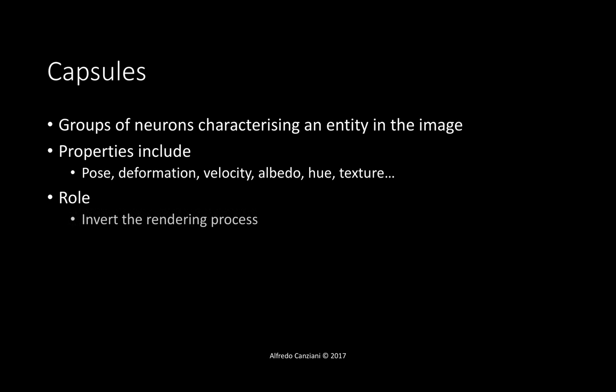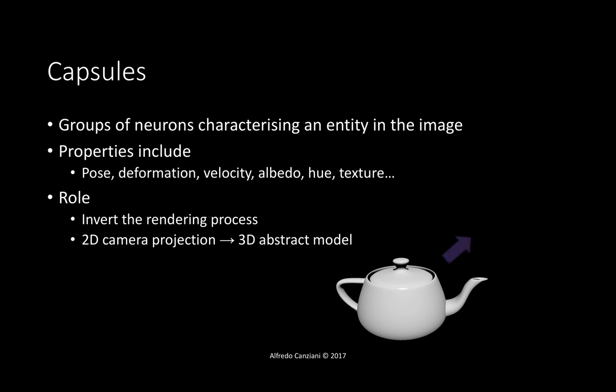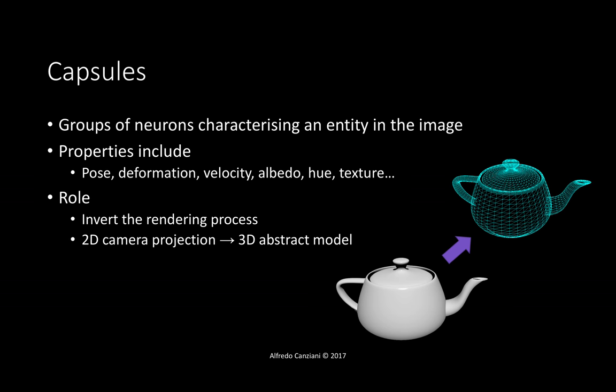What's the role? Why do we need this stuff? So, in this way, if we can have these kind of capsules, which are trying to characterize a specific entity in the input scene, we can try to invert the rendering process. What the heck does inverting the rendering process mean? Let's see. So basically, from a 2D camera projection, we'd like to infer the 3D abstract model that generated the specific view. So I can put a drawing here. So basically, from the picture of a teapot, we'd like to reconstruct its perhaps geometrical representation, right? So this is kind of intuition behind this stuff. We'd like to infer what is the actual entity of which we see an example here.